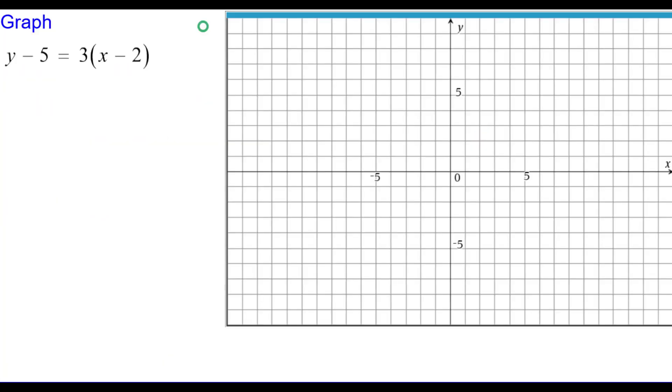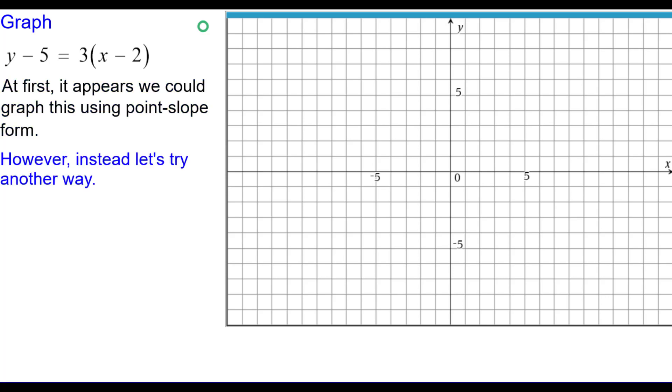So this is the equation we're going to graph: y minus 5 equals 3 times the quantity x minus 2. It first appears we could graph this using the point slope form. However, instead, let's try a different way.